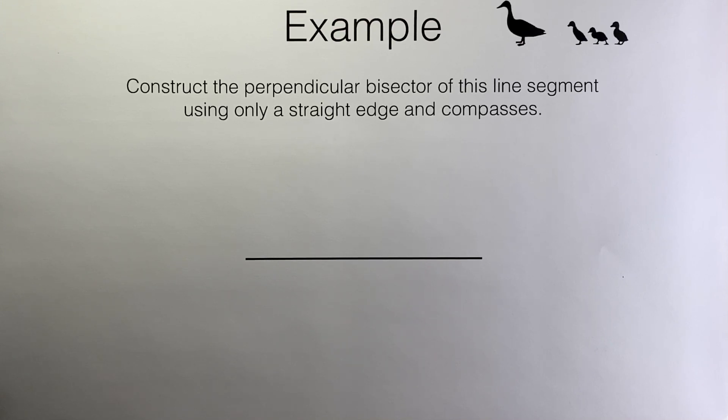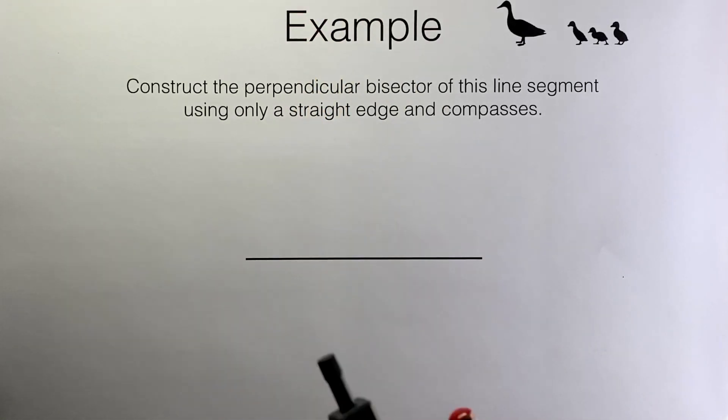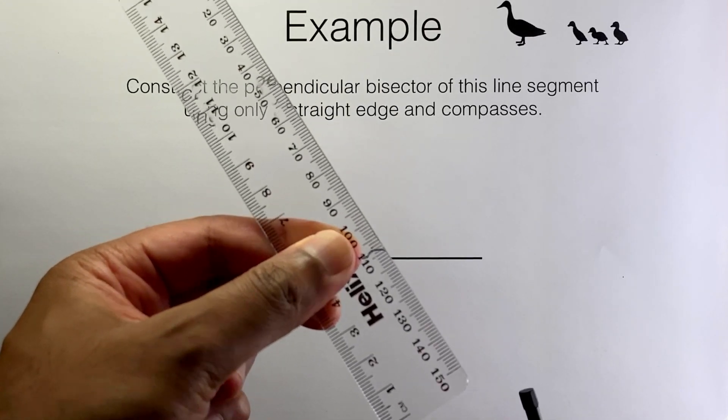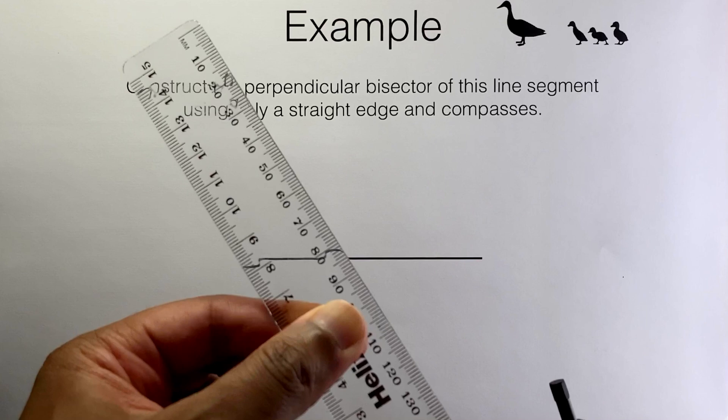Again surprisingly we can do this without using a protractor. All we need is a pair of compasses and a straight edge. Here are my compasses and I'm going to use a ruler as a straight edge to help me draw straight, but I won't be using it to measure anything.